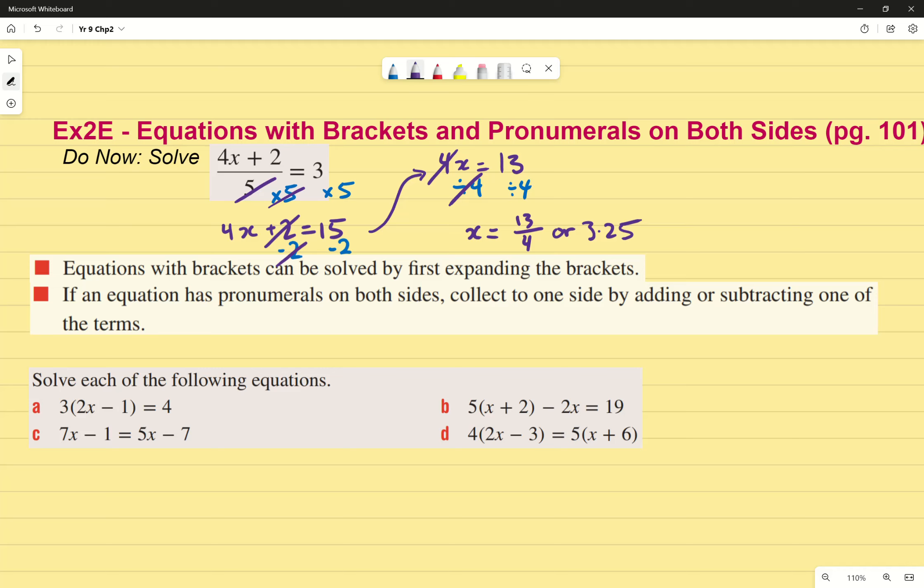I'll give you 30 seconds to copy that down. The other two dot points, these two right here, you're going to write down in your short form. Again, expand brackets first and then work with whatever we've got at the end of it.